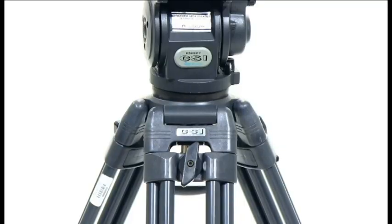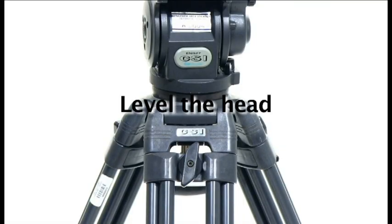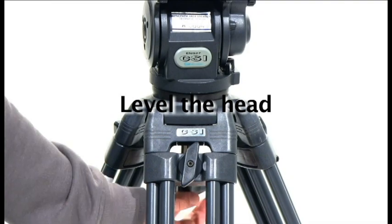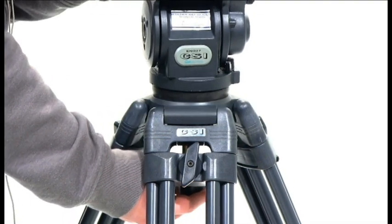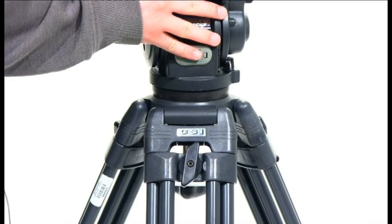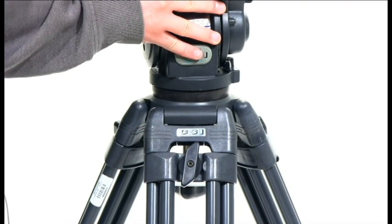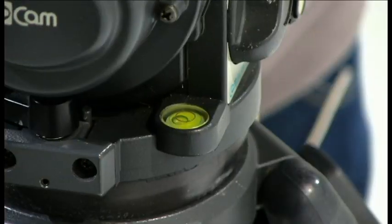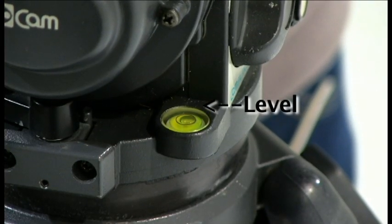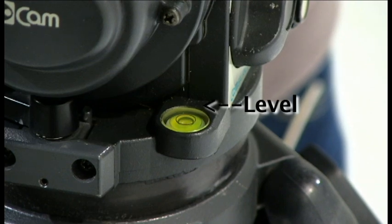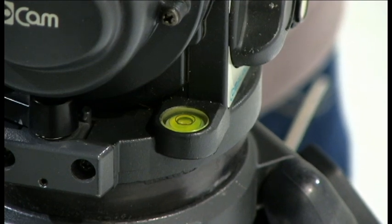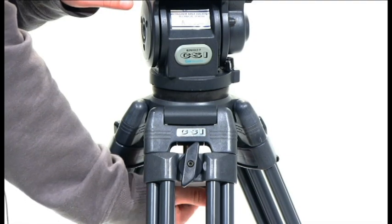Step number 4. Now it's time to level the tripod head so that when you put the camera on it, it isn't lopsided. Start by loosening the claw bog retainer knob. This will allow you to move the head until it's level. You can tell if the head is level by checking the level on the head. Once the bubble on the level is in the middle of the circle, re-tighten the claw ball retainer knob.